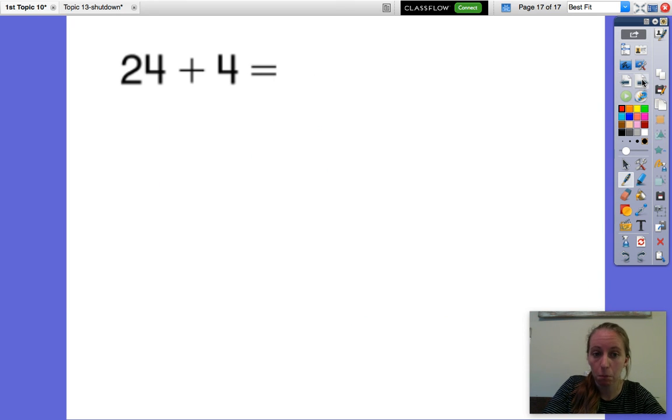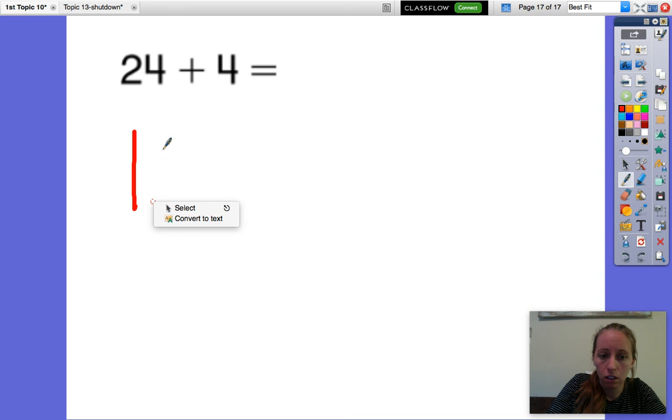Okay, here's our last problem. And then you're going to be able to try this on your own. 24 plus 4. First, I'm going to build 24. 1, 2 tens. 10, 20, 21, 22, 23, 24. Plus 4. 1, 2, 3, 4.